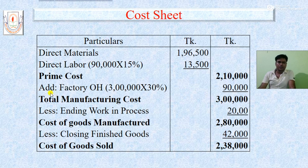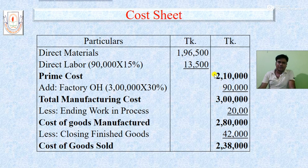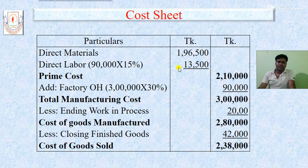From the total manufacturing cost of 3 lakh taka, we apply 30% to get factory overhead. So factory overhead = 30% of 3 lakh = 90,000 taka. Now, 3 lakh minus 90,000 taka gives us 2 lakh 10,000 taka, which is the prime cost. Direct labor cost is 15% of factory overhead.